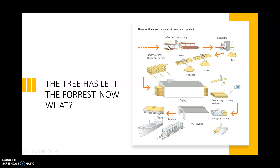Here are the steps when the timber gets to the sawmill. They are sorted by their size, then debarked, sawn into different planks of wood, stacked by their size and timber type, then dried, inspected, wrapped, and then transported out. In this video we are going to talk about this section here and forest thinning as well.